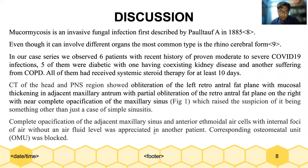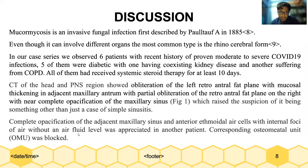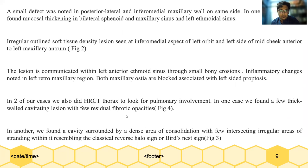Complete opacification of the adjacent maxillary sinus and anterior ethmoidal cells with internal foci of air without an air-fluid level was appreciated in another patient. The corresponding ostiomeatal unit was blocked. A small defect was noted in the posterolateral and inferomedial maxillary wall of the same side.